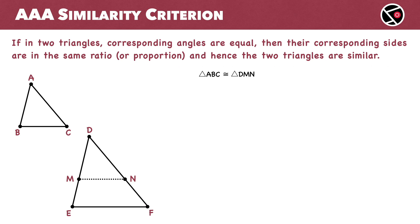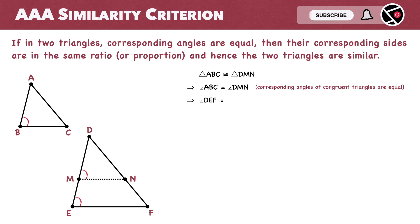In congruent triangles, corresponding angles are equal. So angle ABC equals angle DMN. We're also given that angle ABC equals angle DEF. Replacing angle ABC with angle DEF, we get angle DEF equals angle DMN.